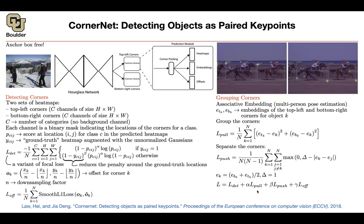The final loss combines the detection loss, the pull-and-push embedding loss, and the offset loss. Once you have the heat maps and embeddings, you know which top-left corner associates with which bottom-right corner. A post-processing stage, including non-maximum suppression specific to this paper, draws the final bounding boxes.